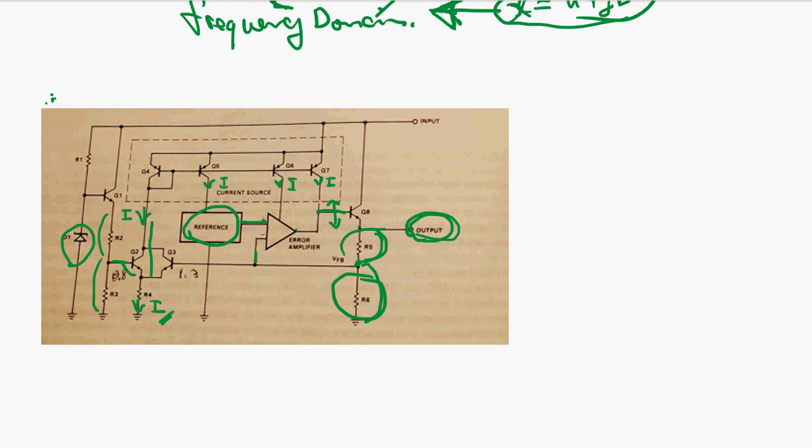They all operate with a constant current source. Why is that important? The input can change around, but even if the input changes, the constant current doesn't change — so it doesn't affect those operations. Because if you don't use a constant current, when the input changes, the voltage reference may change and the error amplifier operation may change too. So make sure this is a constant current — it sets the voltage exactly the way this feedback loop defines.